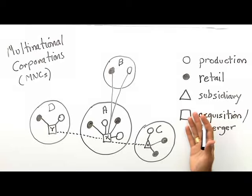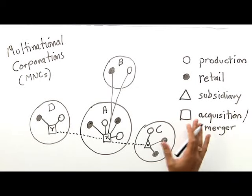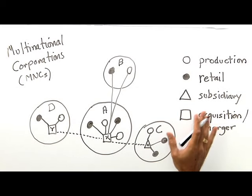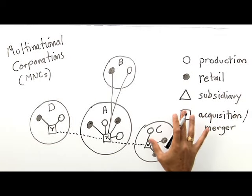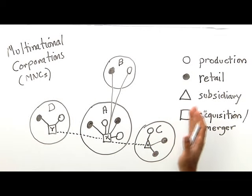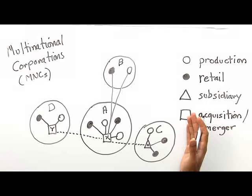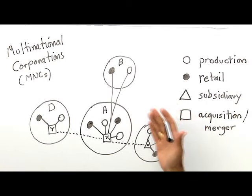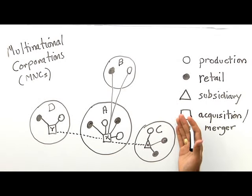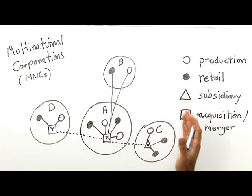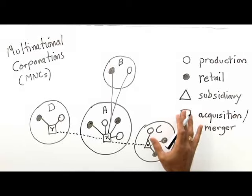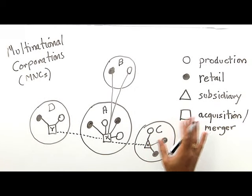And there are many companies like this. There are over 80,000 multinational corporations in the world today, and they control over 800,000 subsidiaries. Some of these companies are also very big. Dozens of them have annual revenues of over $100 billion U.S. Today, multinational corporations account for about one-third of world exports.